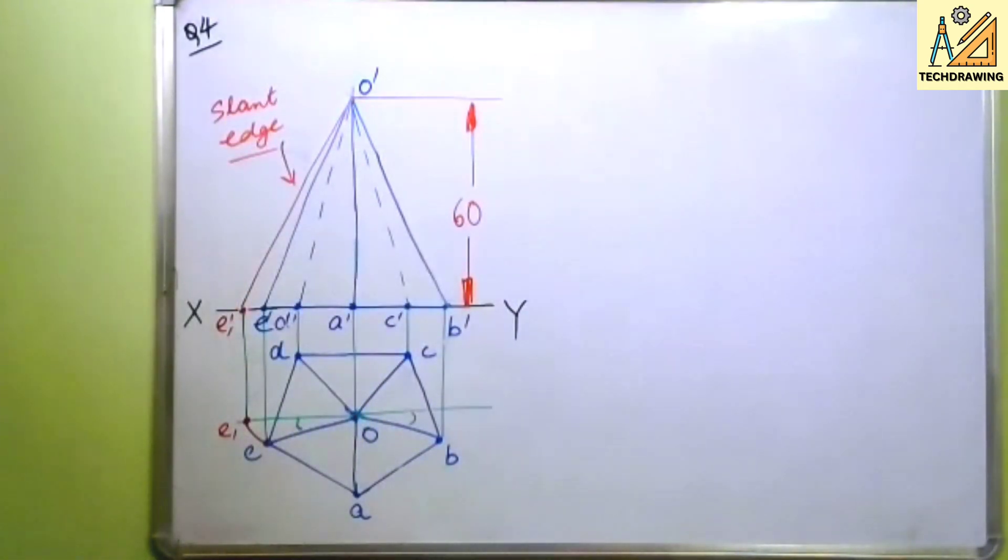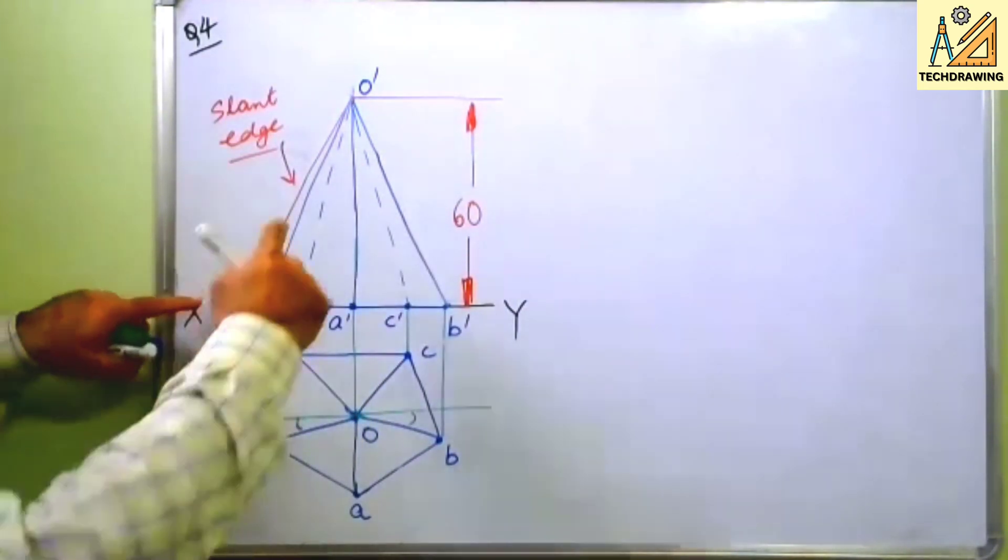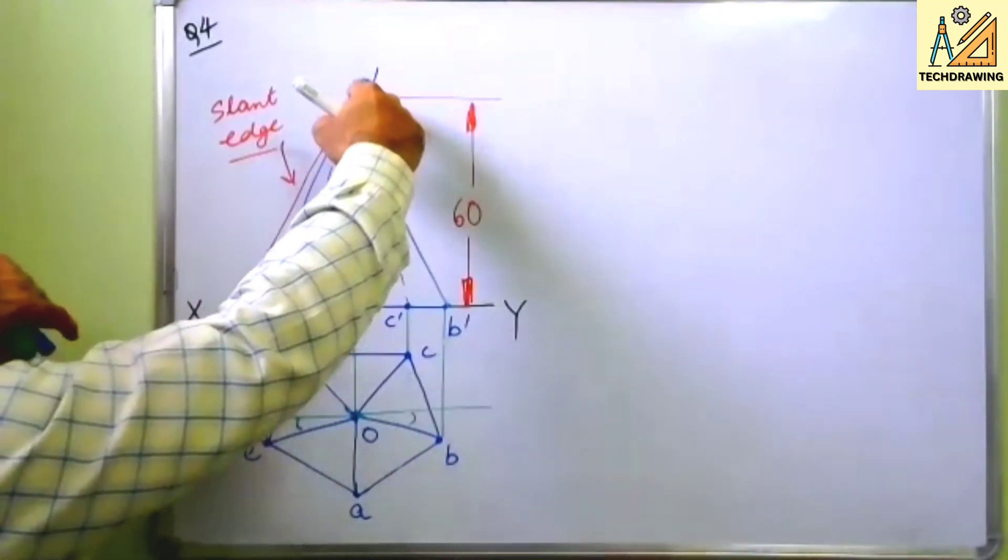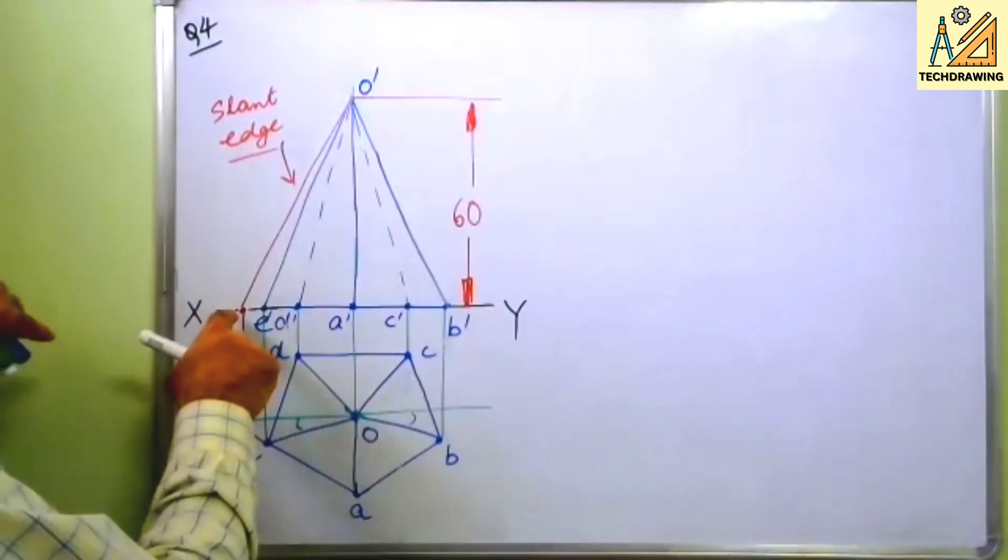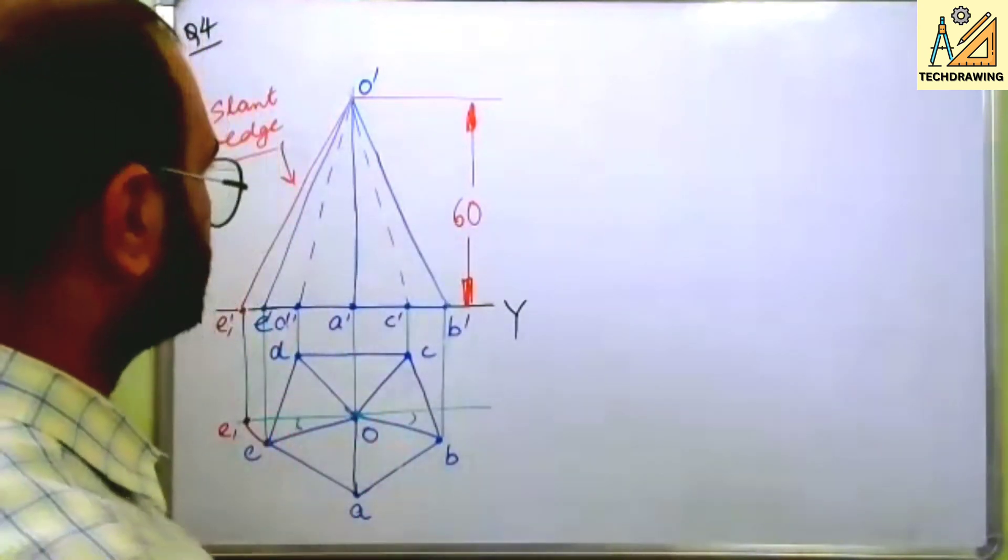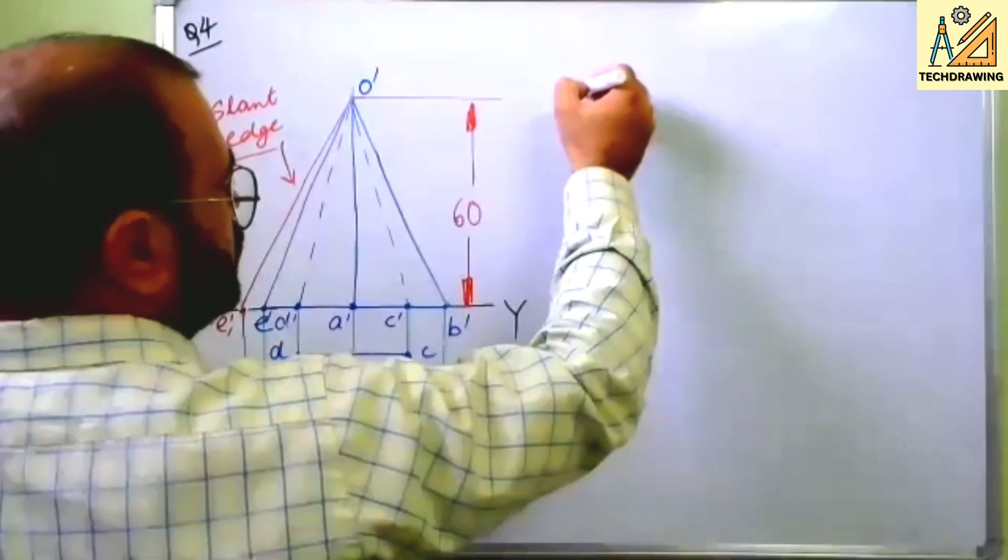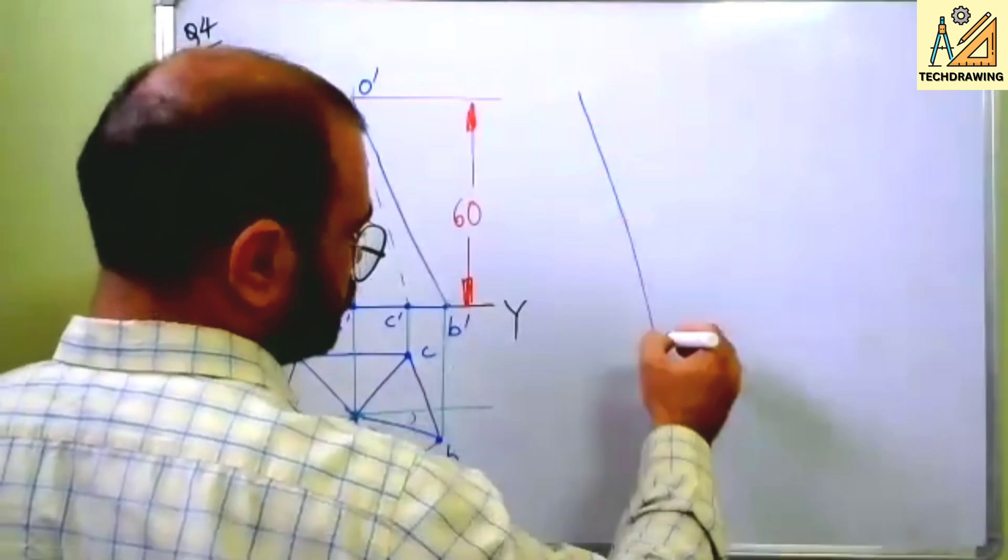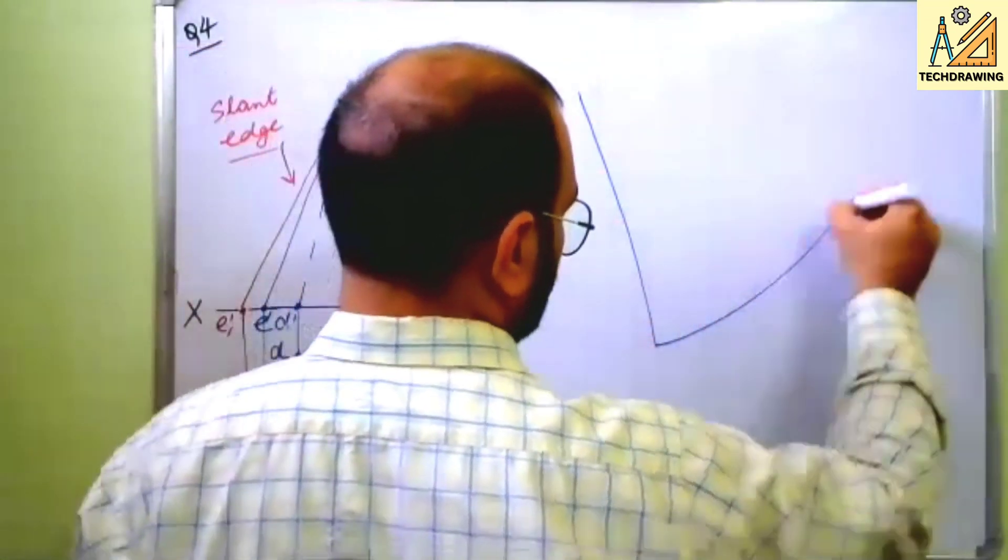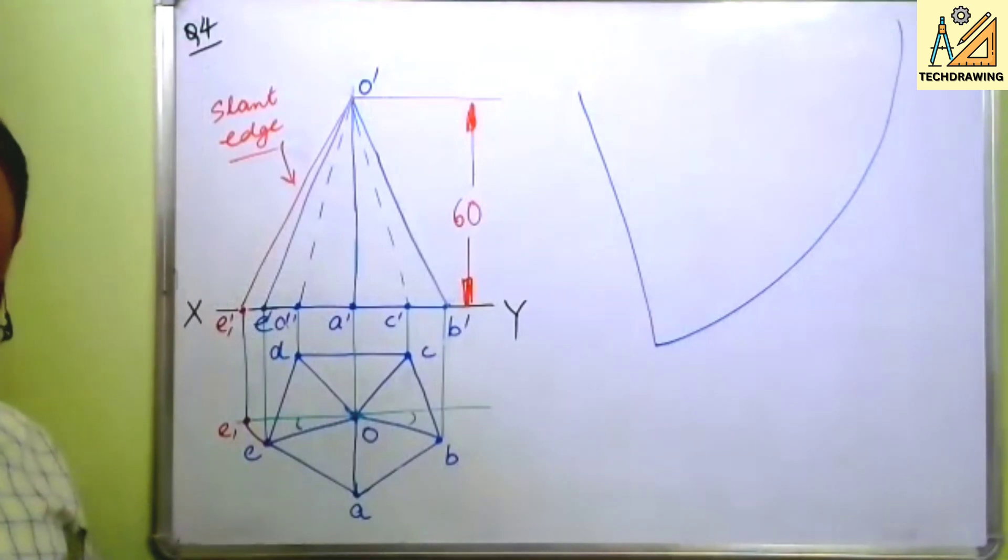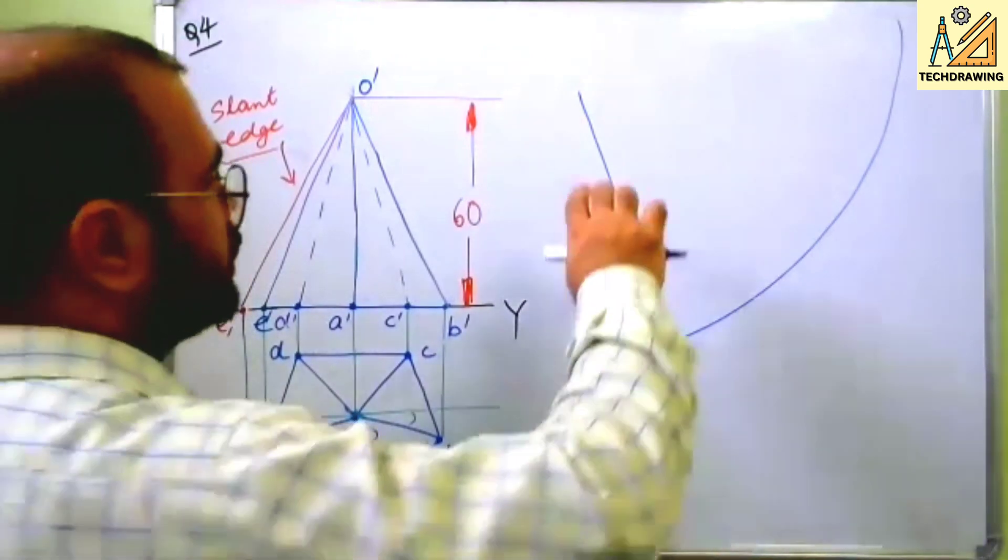Now after this, open your compass, keep it at one end at O, other end at E dash. This will be your slant edge. You just draw an arc like this. Draw an arc.